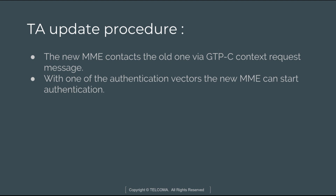After successful authentication, the new MME analyzes whether a serving gateway change is needed. The new MME informs the old MME via a Context Acknowledgement message that it is ready to take control of the user equipment. The old MME then starts a timer and waits for cancellation of the subscriber record. This completes the tracking area update procedure. This concludes tracking area optimization part one, and we will continue in the next class.